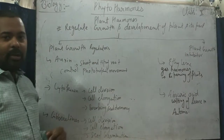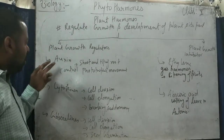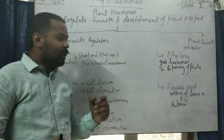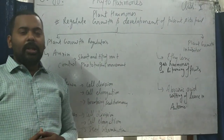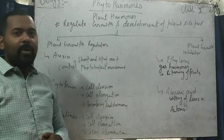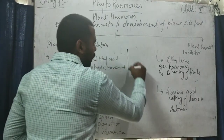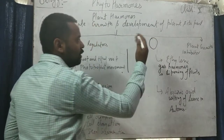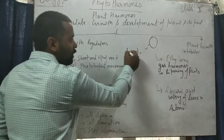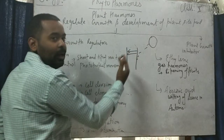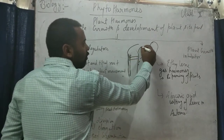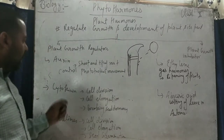Starting with plant growth regulators — they are of three types: auxin, cytokinin, and gibberellins. First, auxins are found in the shoot tip and root tip. They increase the size of the plant and also help in phototropic movement. For example, when sunlight falls on one side of the plant, auxin moves towards the other side where sunlight is not coming, depositing there, and the plant bends itself towards the light.